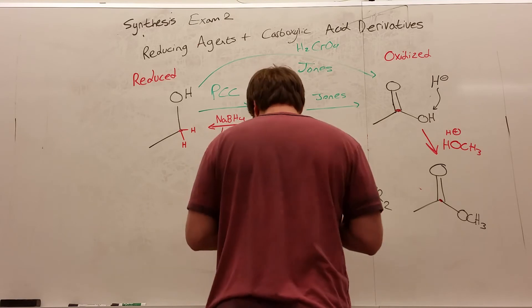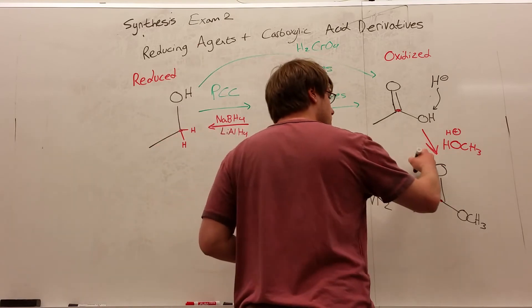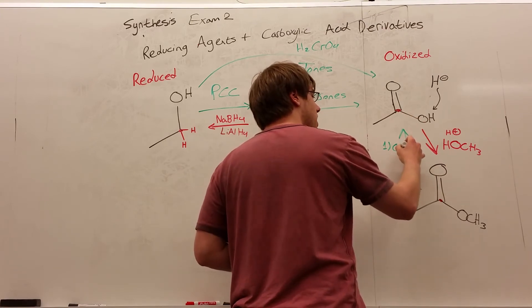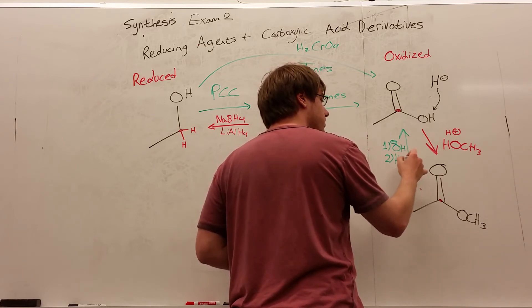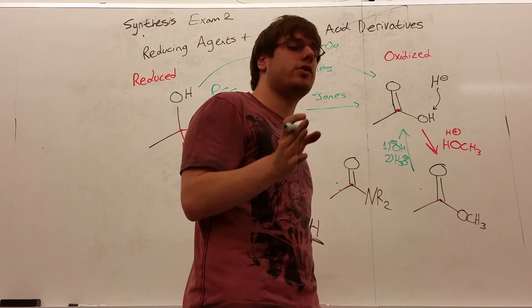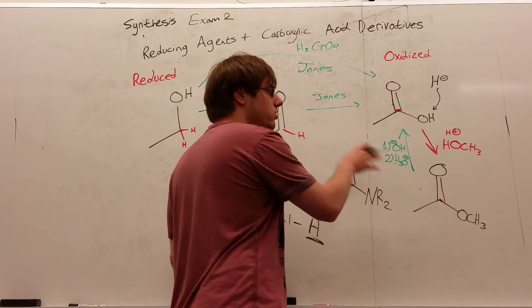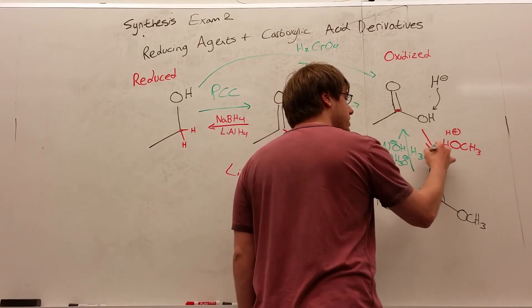And now what if I want to go in reverse? What if I want to turn the ester into the carboxylic acid? To do that, what you need over the arrow is step one, OH minus. Step two, H3O positive, or H plus. It doesn't really matter if it's H3O positive or not, just H plus. Now a point to make is, you could actually do this in one step. You could just do H3O positive, and that will yield the same thing.